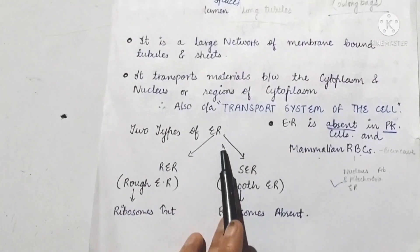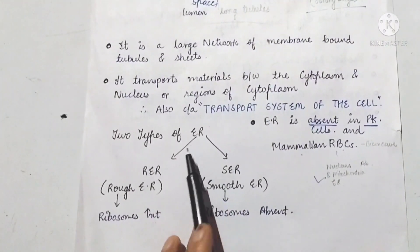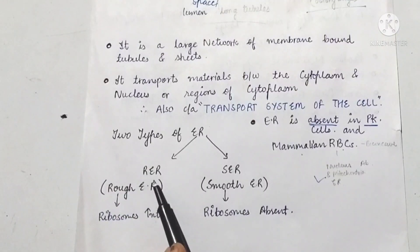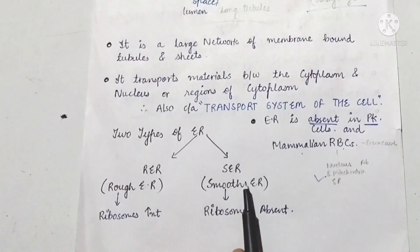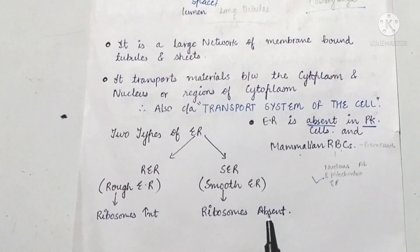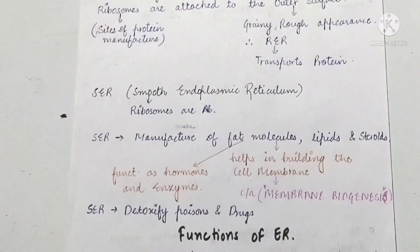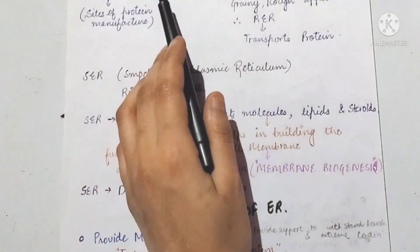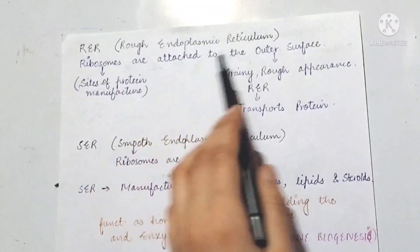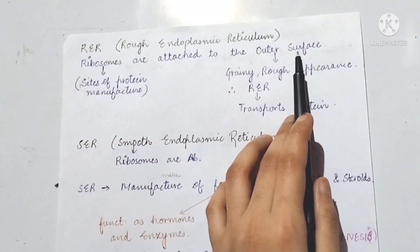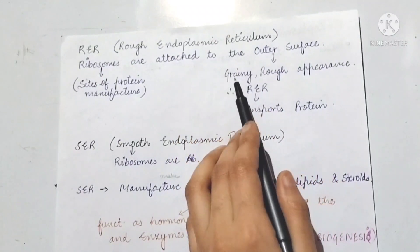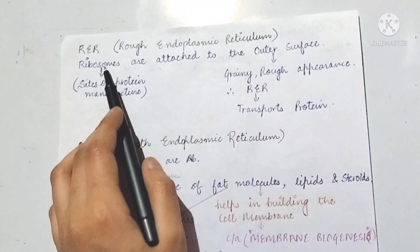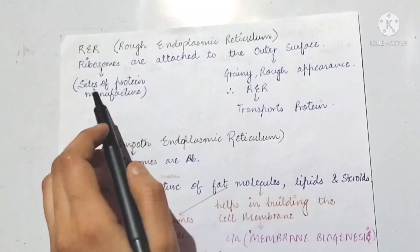Rough endoplasmic reticulum has ribosomes present on its outer surface, giving it a grainy and rough appearance. Smooth endoplasmic reticulum does not have ribosomes present, so it has a smooth appearance.